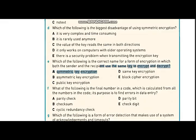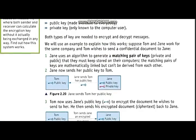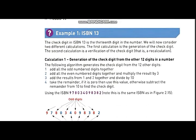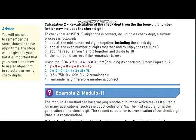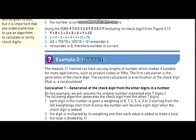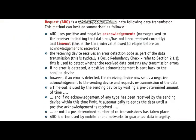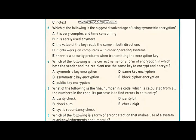Now let's move on to part F: which of the following is the final number in a code which is calculated from all the numbers in the code, and whose purpose is to find errors in data entry? As discussed in the book, a check digit is a final digit that is added. We had discussed two methods: ISBN 13 and module 11. When you add a final digit to a number, the method used is known as check digit. The answer to question F is check digit.